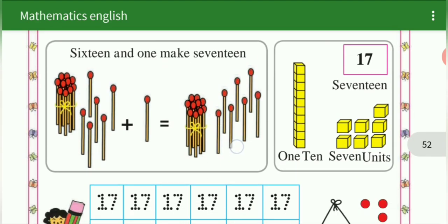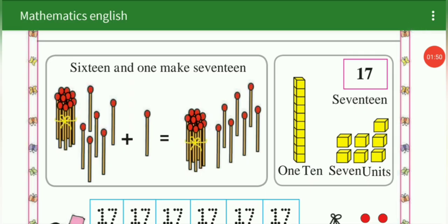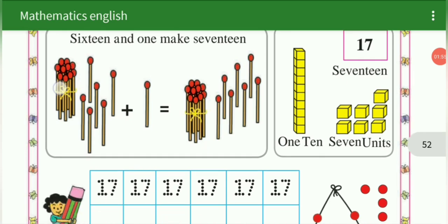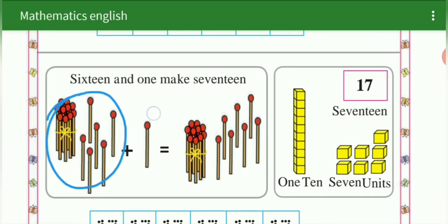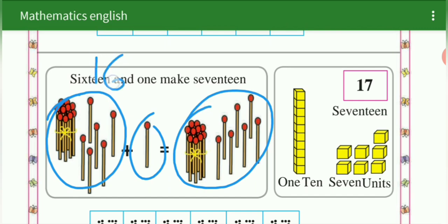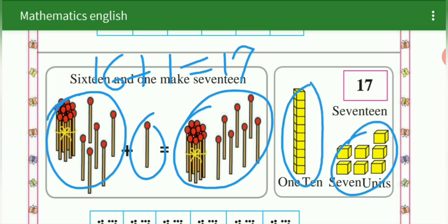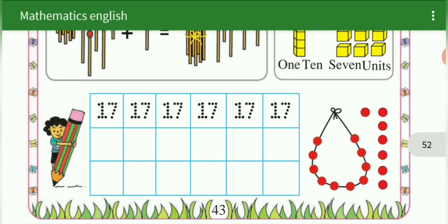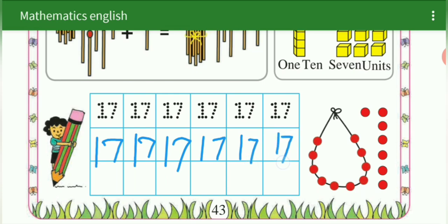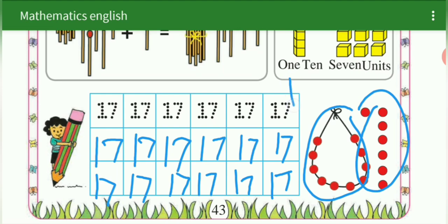Next we are going to learn 17. See here — 16 plus 1 makes 17. See here: 10 plus 6 is 16, 16 plus 1 is equal to 17. See here — 10 box plus 7 blocks is equal to 17. 10 plus 7 is equal to 17. This is for your homework — 17. 10 beads plus 7 beads is equal to 17.